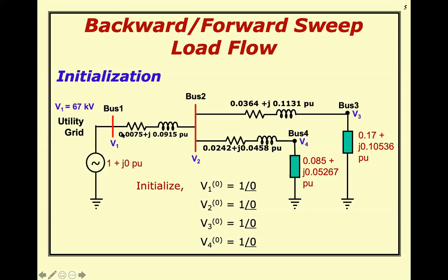This is a simple network. We have the utility grid with a fixed voltage of one angle zero. We know the impedances. One load draws 0.085 plus J0.05267 per unit (real and reactive power). The other load draws 0.17 plus J0.10536 per unit. The first step is to initialize all voltages. Vs is one angle zero (one plus J zero), and we initialize V2, V3, V4 as one angle zero.